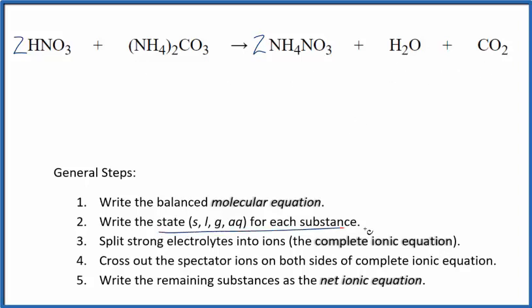Next we can write the state for each substance. That looks like this. Compounds with the nitrate ion, very soluble. Nitric acid is a strong acid, so that's soluble. Compounds with the ammonium ion, very soluble. Water's a liquid, carbon dioxide, that's a gas. So we have the states.